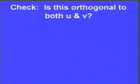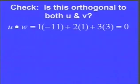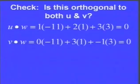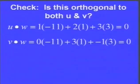Let's double-check that w = (−11, 1, 3) is orthogonal to both u and v. To check orthogonality, take the dot product. For u·w: 1·(−11) + 2·1 + 3·3 = −11 + 2 + 9 = 0. For v·w: 0·(−11) + 3·1 + (−1)·3 = 0 + 3 − 3 = 0. Both are zero, confirming w is orthogonal to both vectors.